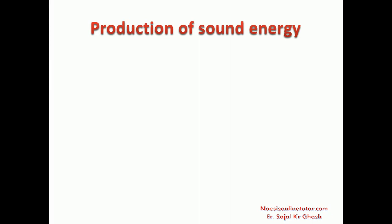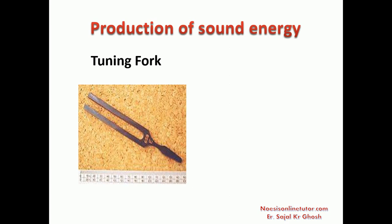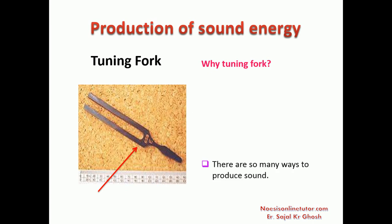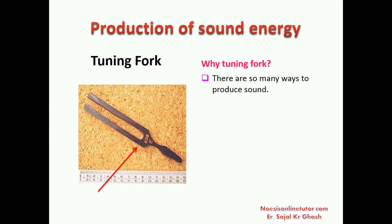Now, production of sound energy. There are different ways of producing sound, but according to our syllabus we should concentrate on the tuning fork. This is a picture of a tuning fork - it is a U-shaped instrument. On its surface you will find markings which are embossed to give information about the frequency that can be generated by this tuning fork. There are many ways to produce sound.